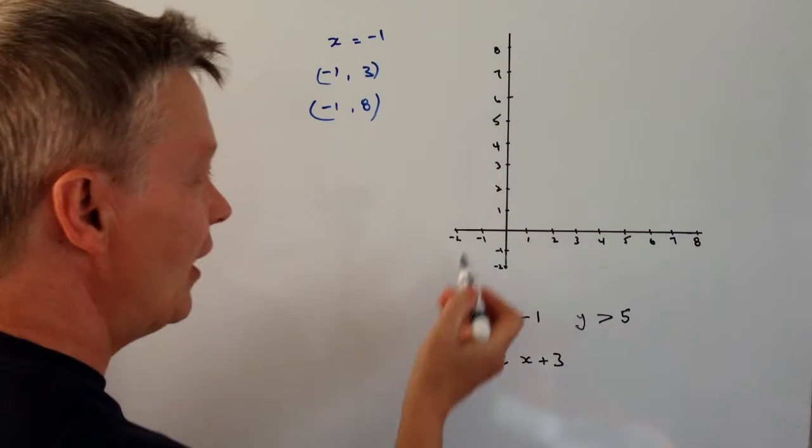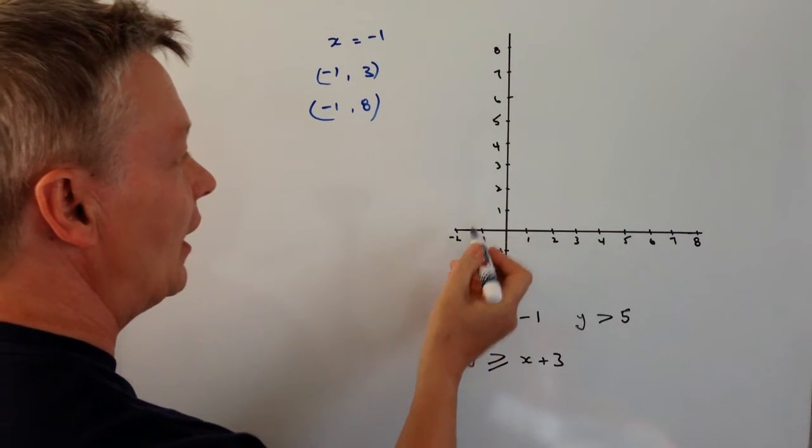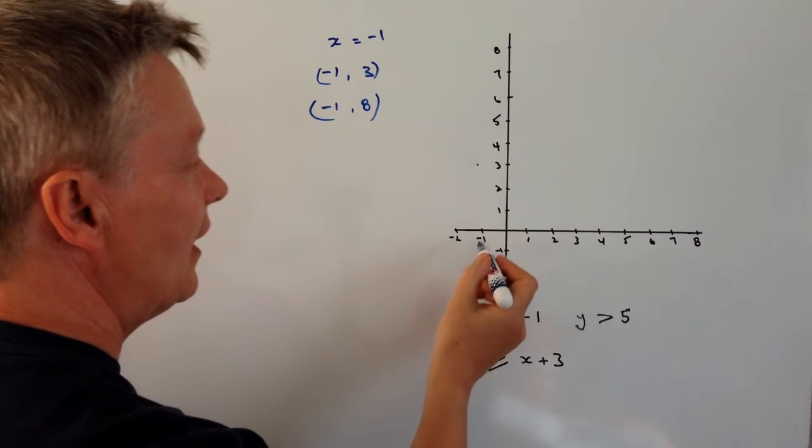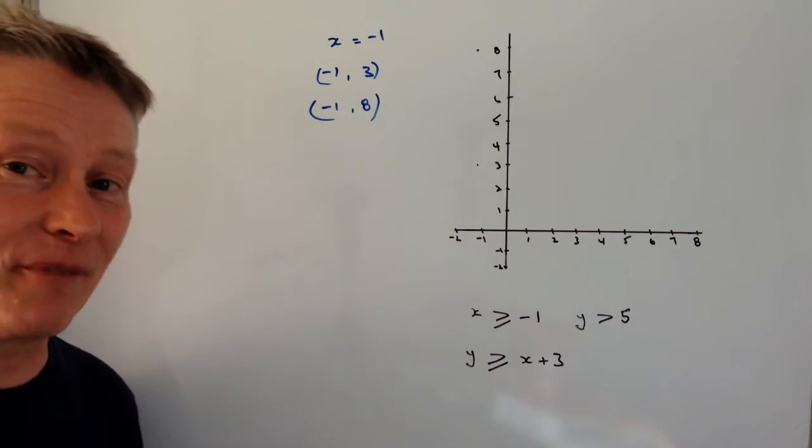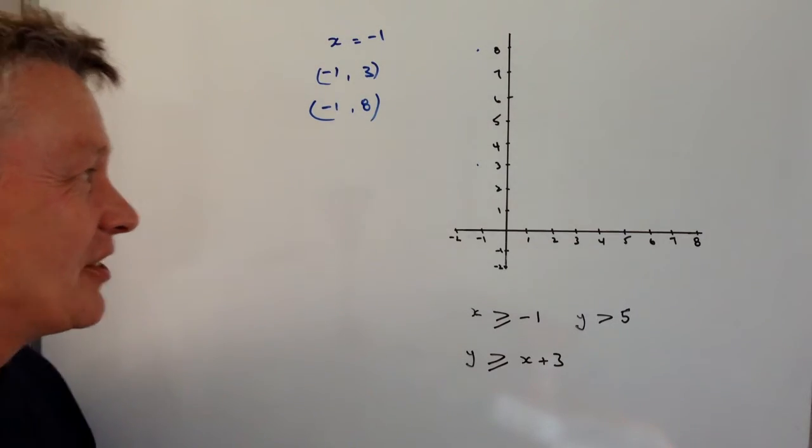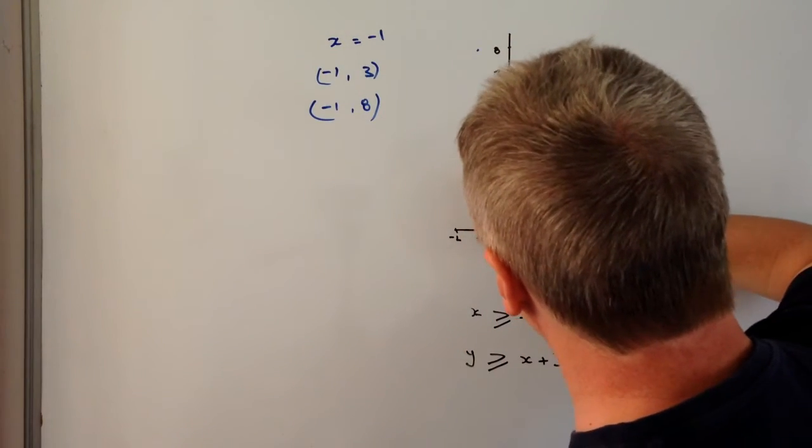So if I just now plot those on the graph, I've got minus 1 and 3 is about here and minus 1, 8 is about here. So I'm just going to turn my back to the camera and just draw that line just to make sure that I've got it as accurately as I can.